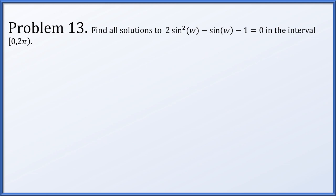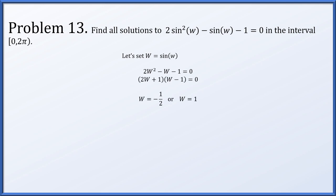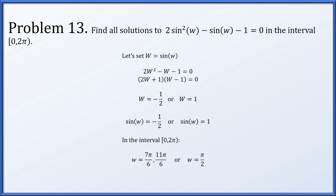In problem 13, we find all solutions to 2 sine squared w minus sine of w minus 1 equals 0 on the interval from 0 to 2 pi, including 0 but not 2 pi. Setting capital W to sine of w gives the quadratic 2W squared minus W minus 1 equals 0, which factors to give W equals minus one half or 1. So sine of w equals minus one half, occurring at 7 pi over 6 and 11 pi over 6, or sine of w equals 1, occurring at pi over 2. Solutions: pi over 2, 7 pi over 6, and 11 pi over 6.